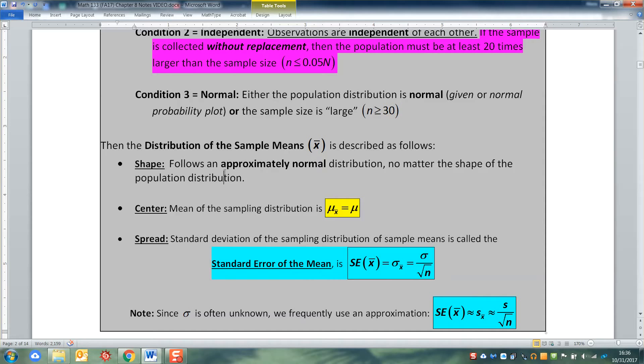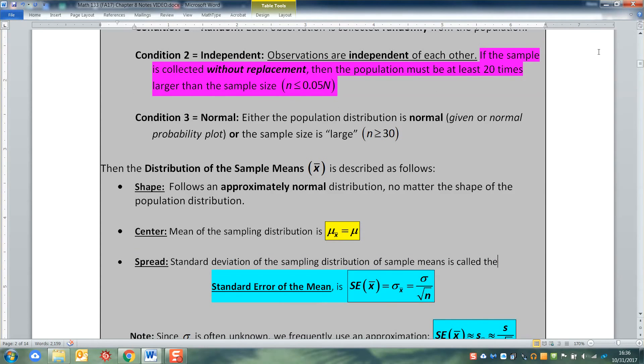What is its shape? What is its center? And what is its spread? And then we noticed that in spread, we learned a new definition, something called the standard error. It's a glorified standard deviation, but it's for this very special sampling distribution.